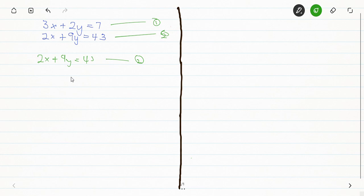So we are going to get 2x equals 43 minus 9y. Then I divide both sides by 2, then I get x equals 43 minus 9y all over 2. Now I can call this x as equation 3.